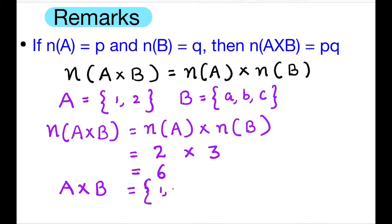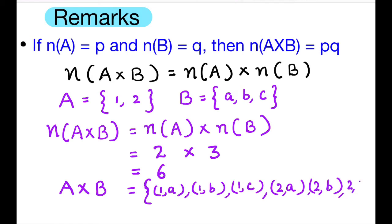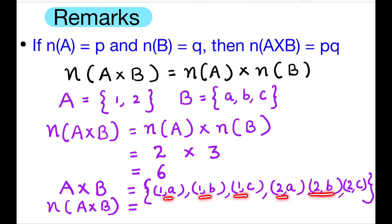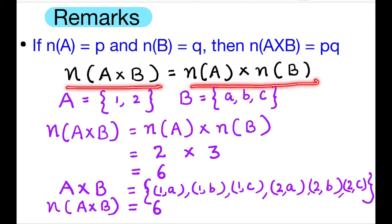A cross B is the set of all ordered pairs: (1,A), (1,B), (1,C), (2,A), (2,B), (2,C). The number of elements in A cross B is 1, 2, 3, 4, 5, 6. So the number of elements in A cross B equals the number of elements in set A multiplied by the number of elements in set B.